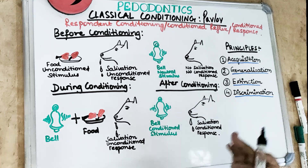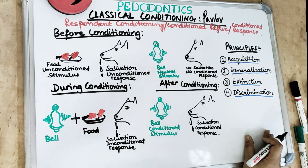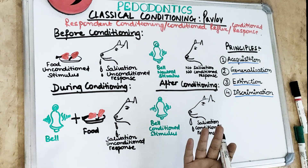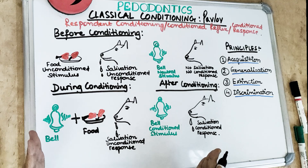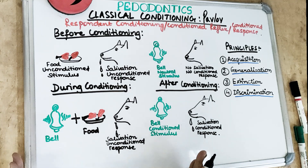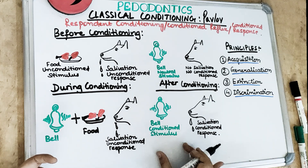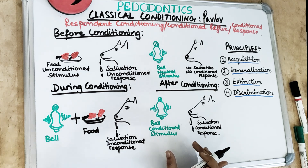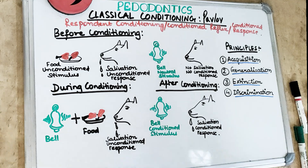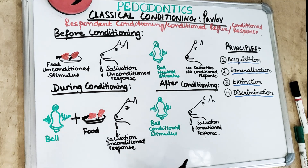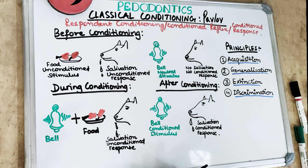Discrimination means differentiating. When a child is exposed to a good dental experience after previously having a bad one, we can differentiate two responses to two different stimuli. For example, the dog can discriminate between which bell is for food and which bell is a fake bell. While using a handpiece, the sound of the handpiece works as a conditioned stimulus, and the child starts crying — which is the conditioned response to the sound of the handpiece.